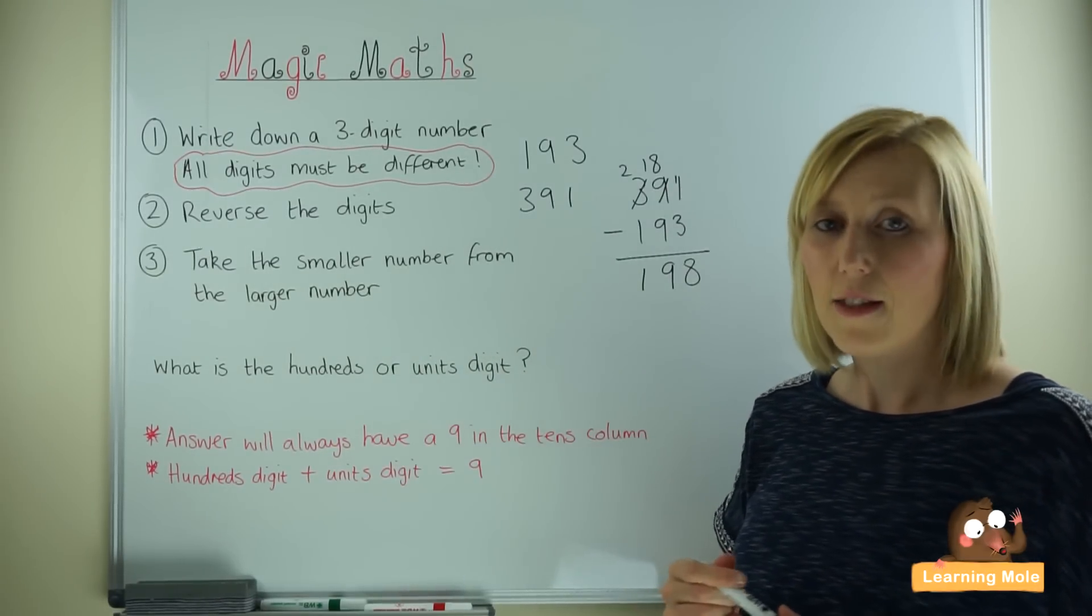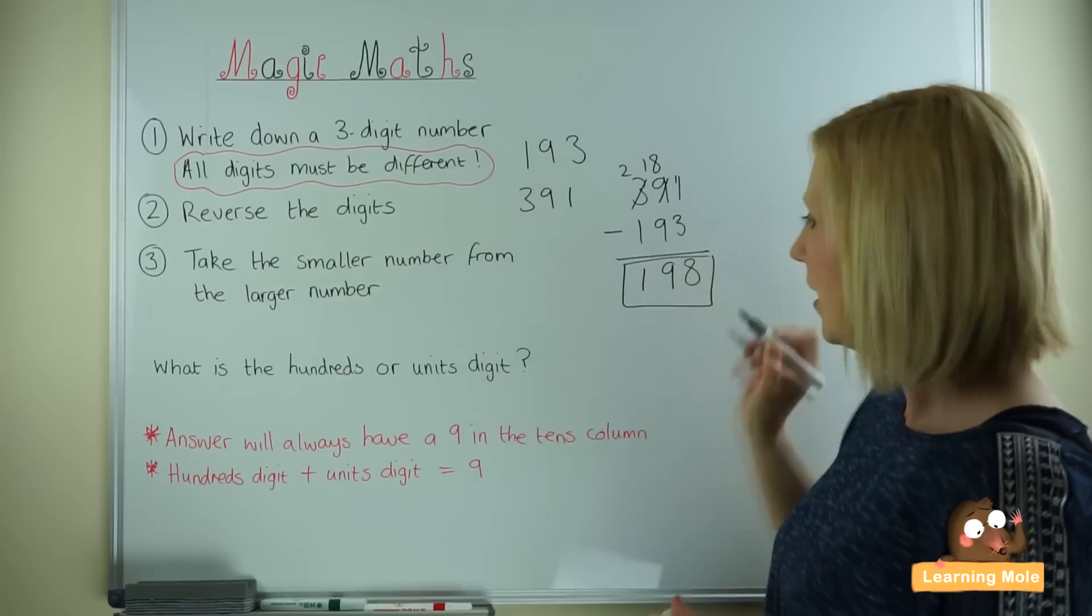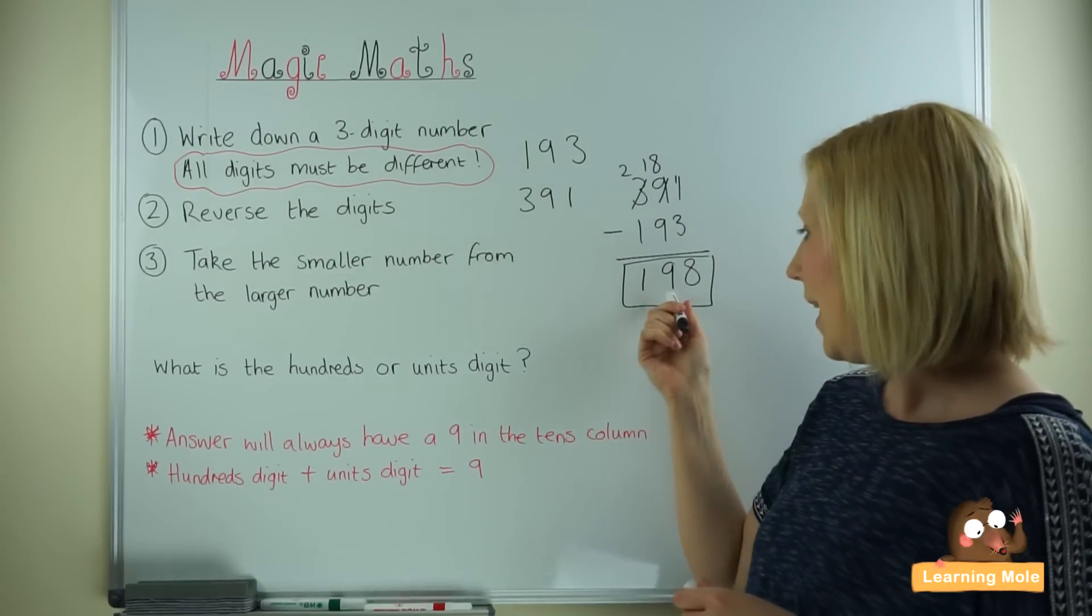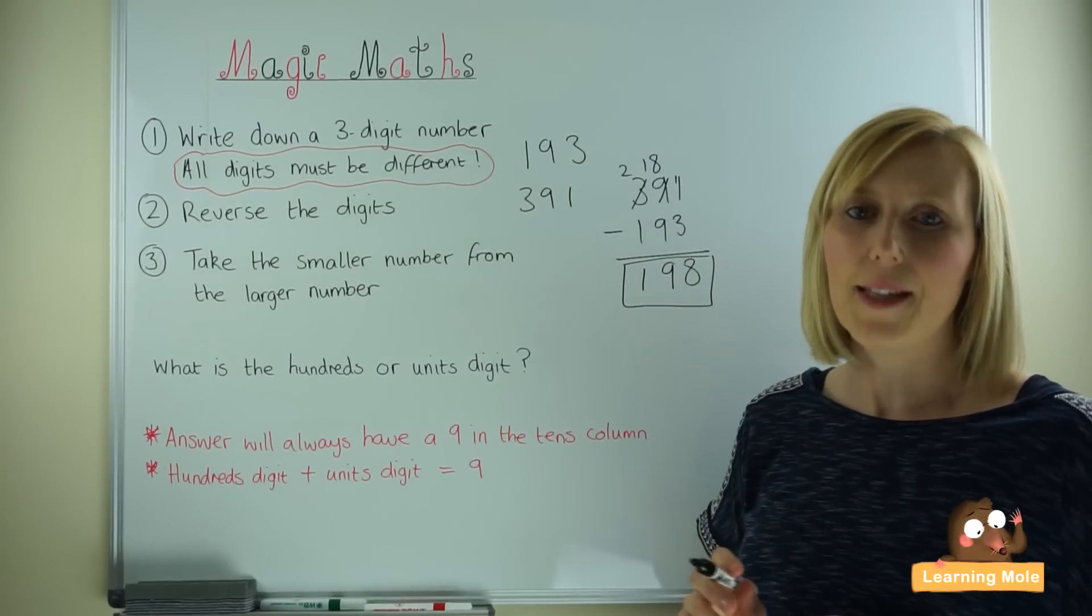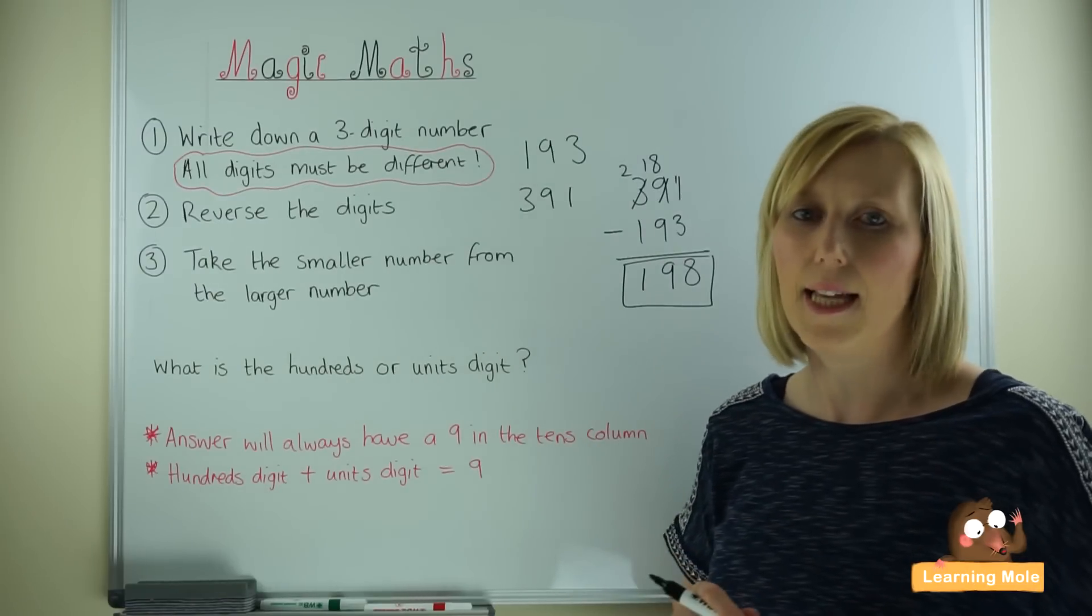Because the answer, my 198, so here's my answer here, will always have a 9 in the tens column, which it does. So that's a given. They don't need to ask anything about the tens column. They know that it's always going to be a 9 in the tens column.